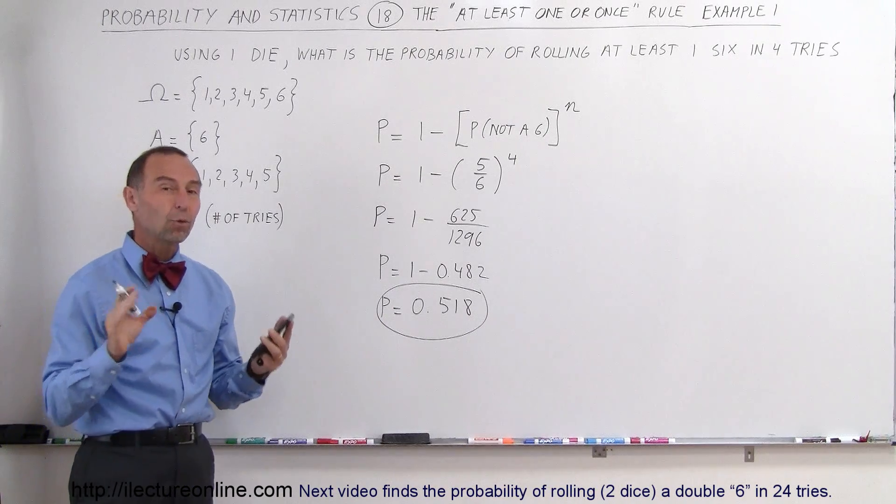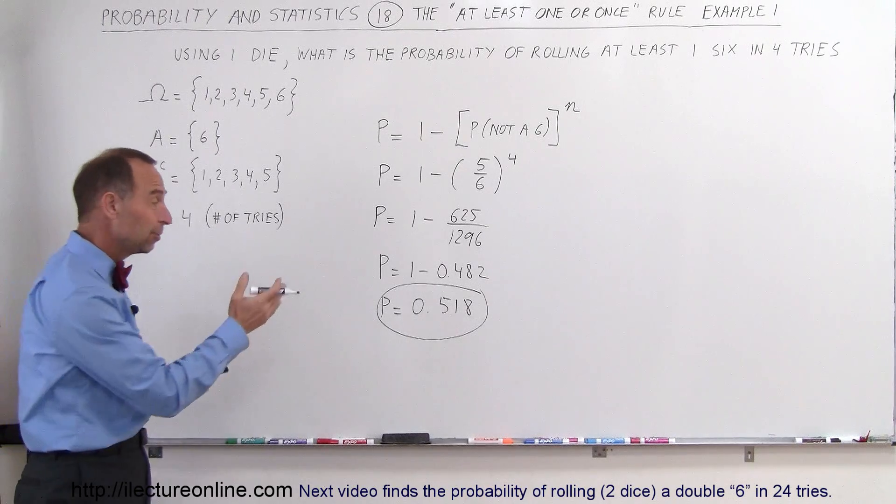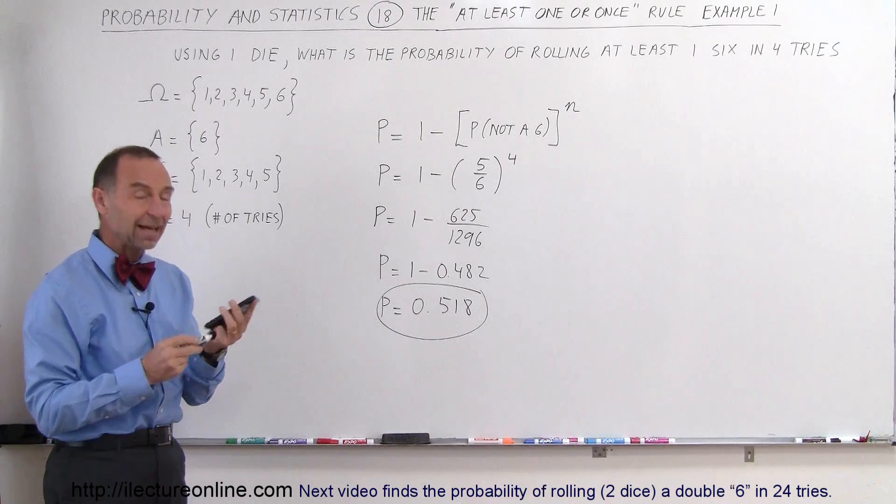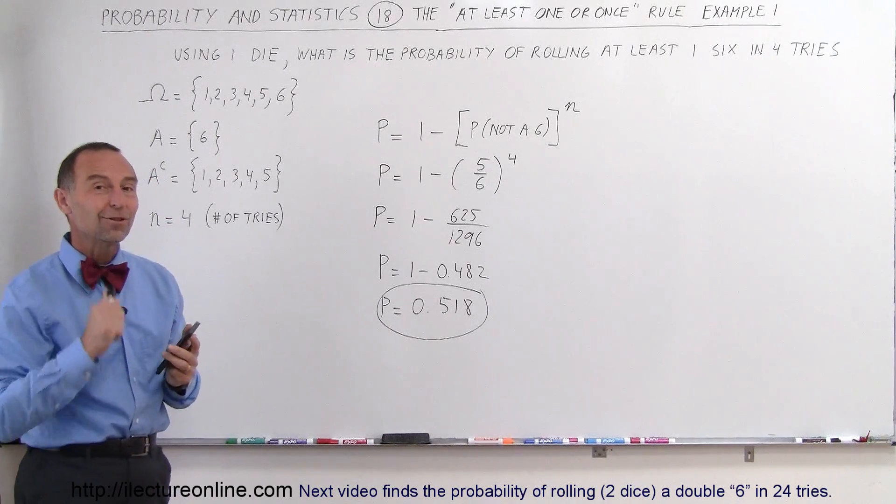You may not have thought so, but if you throw a die four times, the probability of getting any one number—not just six but any one number—is better than 50-50. You have better than a 0.5 probability that you'll hit the number you're looking for.